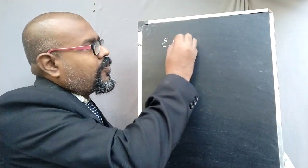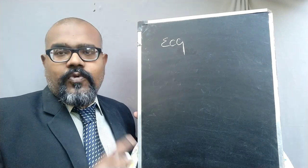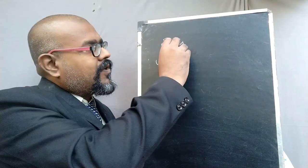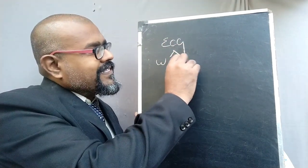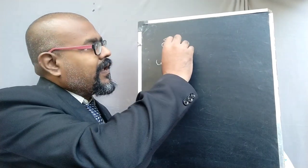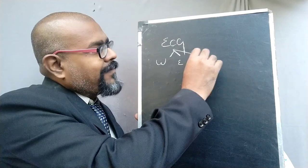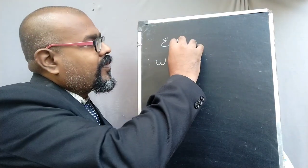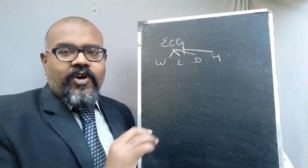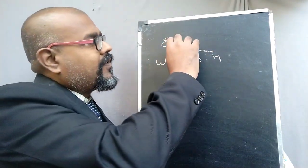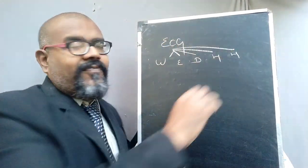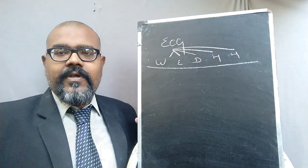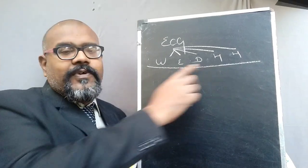ECG — the things we are going to discuss today are: what is ECG, what is the ECG waveform, what are the dimensions — that is amplitude and time duration of that particular waveform — how the waveform is generated, and how the waveform is measured. These are the five questions we need to answer.